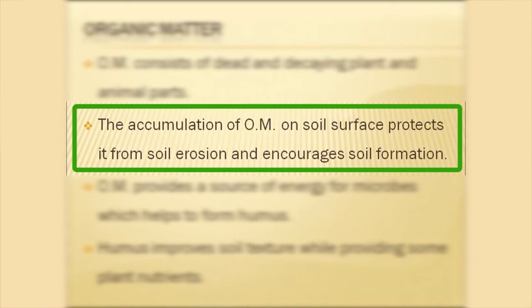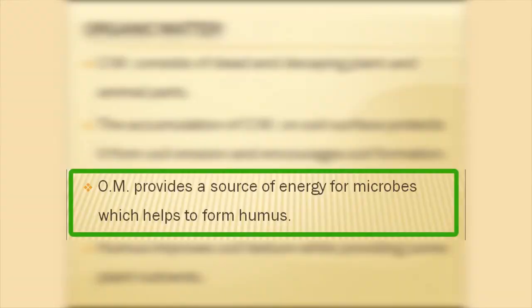The accumulation of organic matter on the soil surface protects against soil erosion — it has an umbrella effect, cushioning water flow and preventing the soil from being eroded over time. This is important because the topsoil contains the most valuable nutrients. Organic matter also provides energy for microbes, which helps form humus — the breakdown of decaying plant and animal materials — which is rich in nitrogen and good for vegetable production.